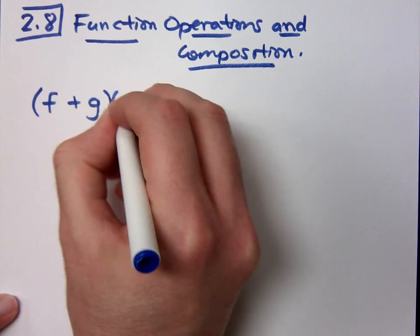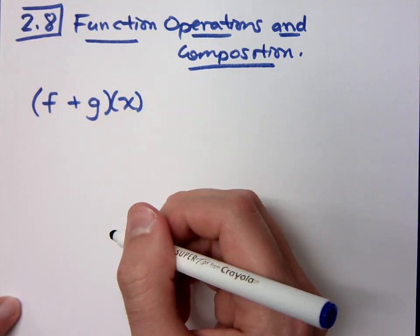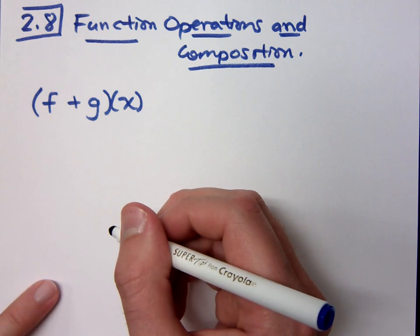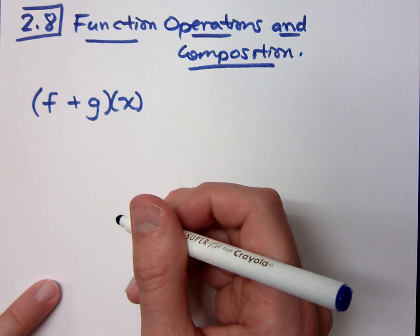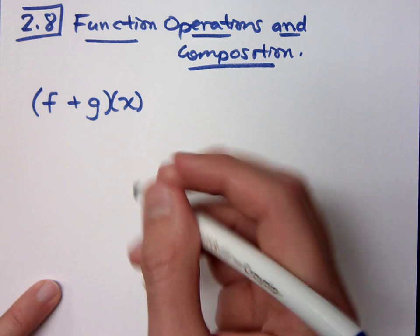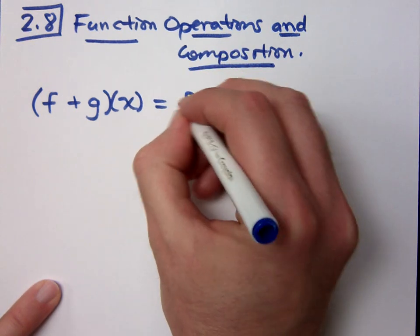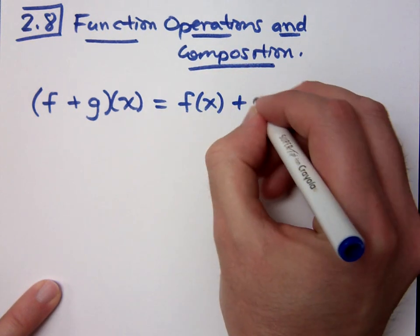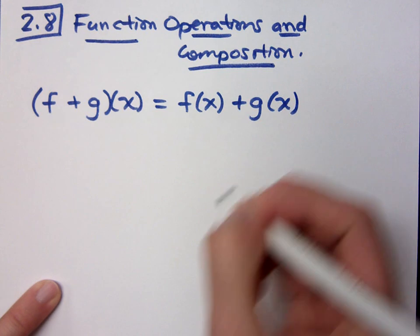If you see this guy right here, f plus g of x, that means I'm talking about two functions, f and g, and guess what I'm trying to do with these guys? I'm trying to add them together, so that means you would just do f of x plus g of x.